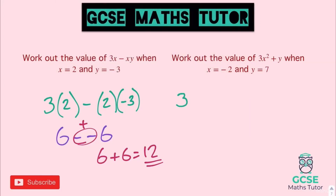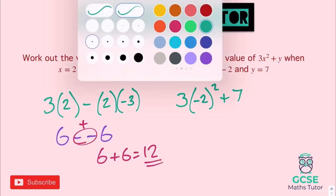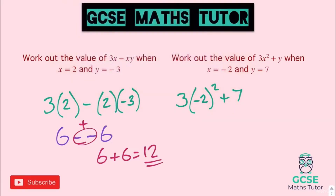The second practice question has a square: 3x² + 7 with x = negative 2. We have 3 lots of negative 2 squared, plus 7. Negative 2 squared is minus 2 times minus 2, which is 4. So we have 3 lots of 4, add 7. 3 lots of 4 is 12, add 7 gives us the answer 19.